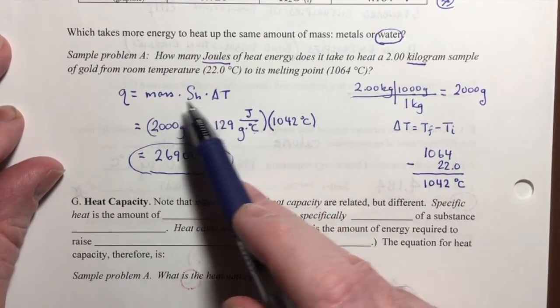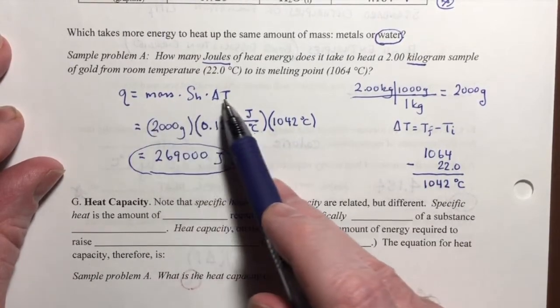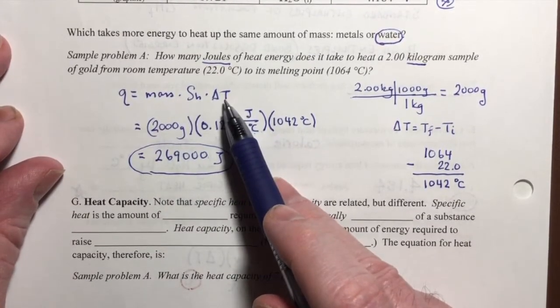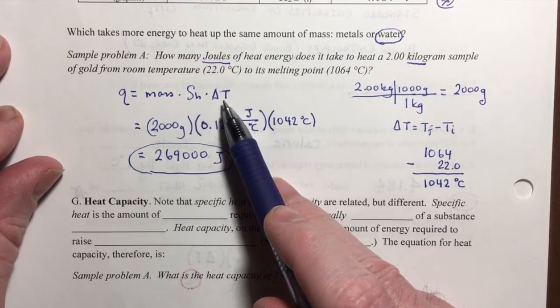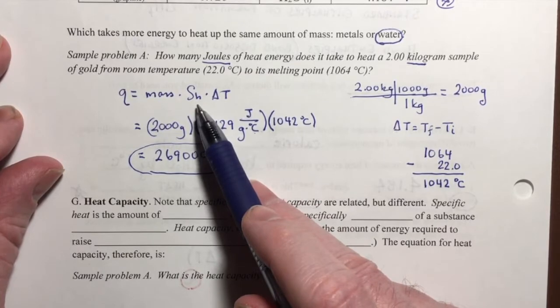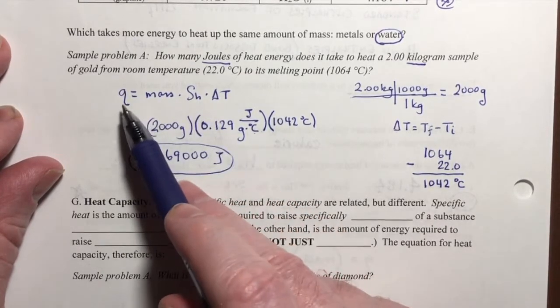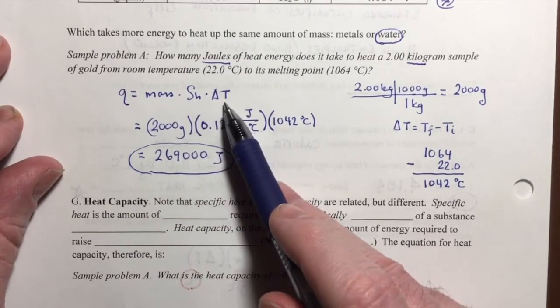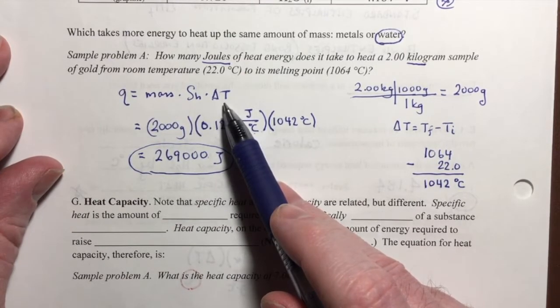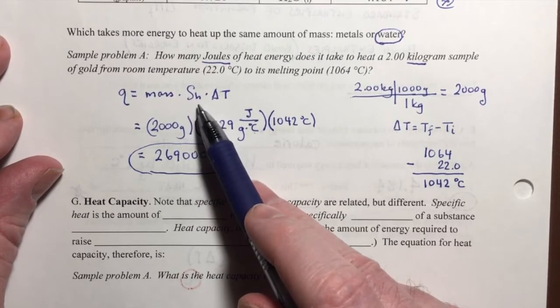But I could easily give you Q and ask you to calculate one of these other variables. For example, if you had an unknown metal and you didn't know its specific heat, I could give you the Q, the mass, and the final and initial temperature, and then you could solve for its specific heat.